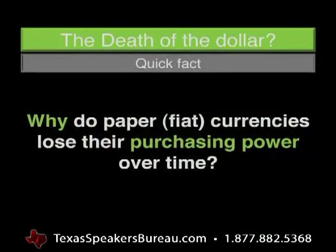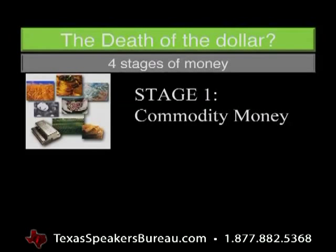Why do these paper monies and currencies lose value over time? There are really four stages of money. Every single economy begins typically with a commodity currency. Villagers get together and begin to use maybe corn, wheat, gold, silver, shells, or cattle — anything divisible, a unit of account, and a store of value.